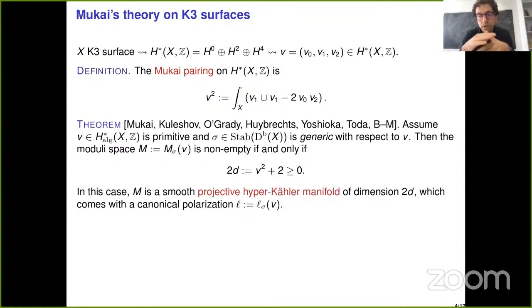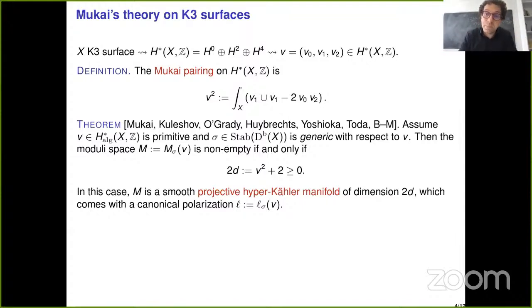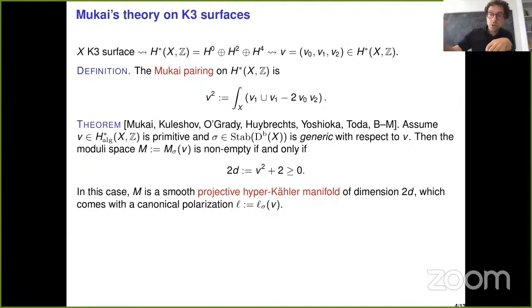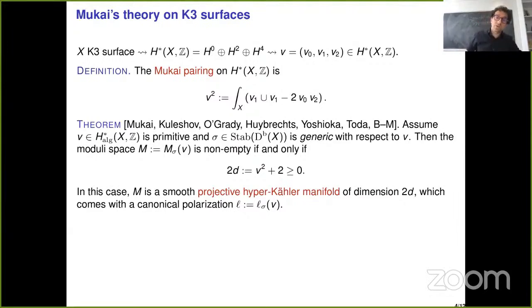In such a case, the moduli space is smooth, projective, and by Mukai's work it carries a symplectic form and is simply connected. By Yau's theorem it carries the hyperkähler metric, so it becomes a hyperkähler manifold of dimension 2d. Finally, a given stability condition canonically induces an ample divisor class on this moduli space, the importance of which we will see in the applications.